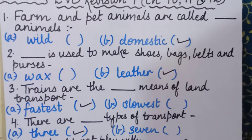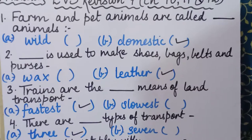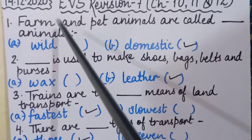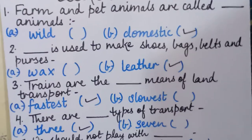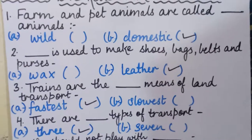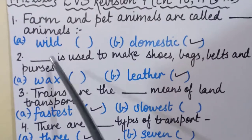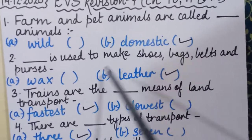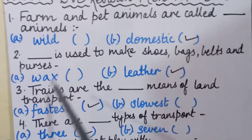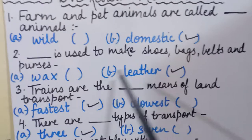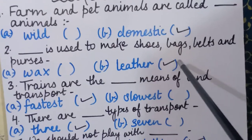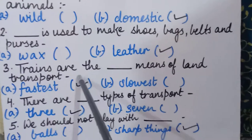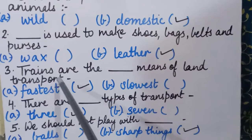Wild animals are those which live in jungles and forests — we don't keep them at home or on farms. The second sentence: '___ is used to make shoes, bags, belts, and purses.' The options are wax or leather. The correct answer is leather, so we will put a tick in front of 'leather.'